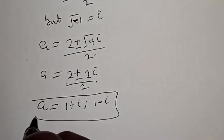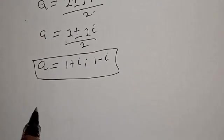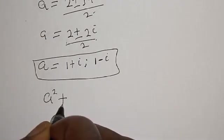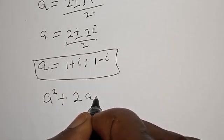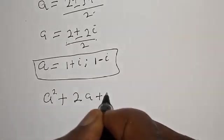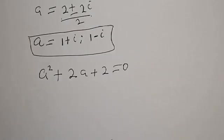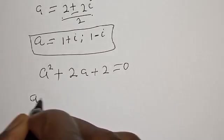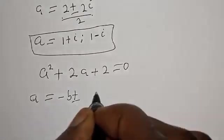For the second case, the equation is a squared plus 2a plus 2 is equal to 0. We can also solve using the quadratic general formula: a is equal to minus b plus or minus square root of b squared minus 4ac, over 2a.